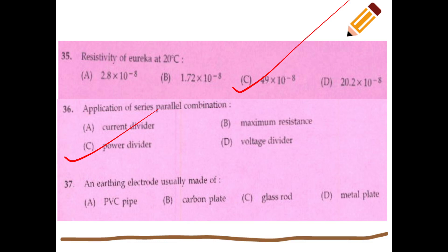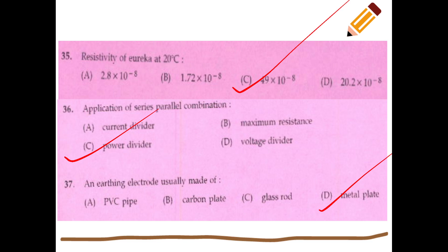An earthing electrode is usually made of a metal plate. A video has been made on this topic.